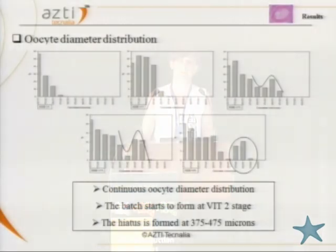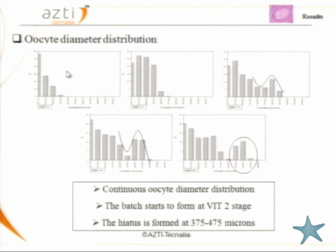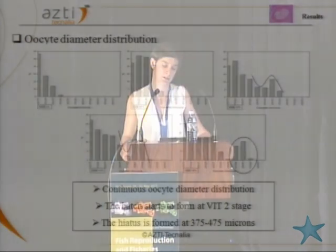From the image analysis data, we described the oocyte diameter distribution from cortical alveoli, B1, B2, B3, and migration stages. We saw that it was continuous with no gap between pre-vitellogenic and vitellogenic stages. That means there could be a recruitment from pre-vitellogenic to vitellogenic during the spawning season, which could be evidence of indeterminate fecundity.